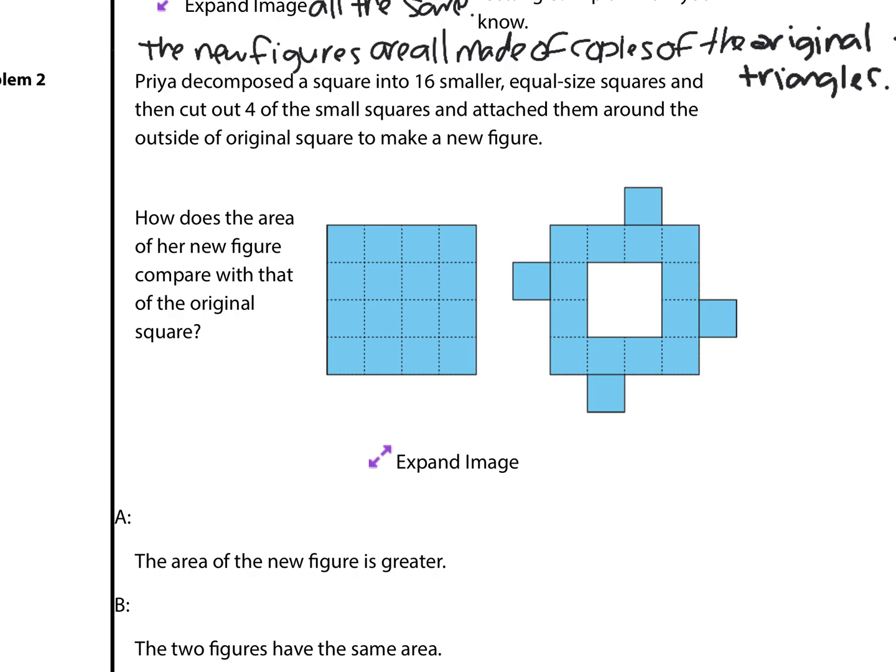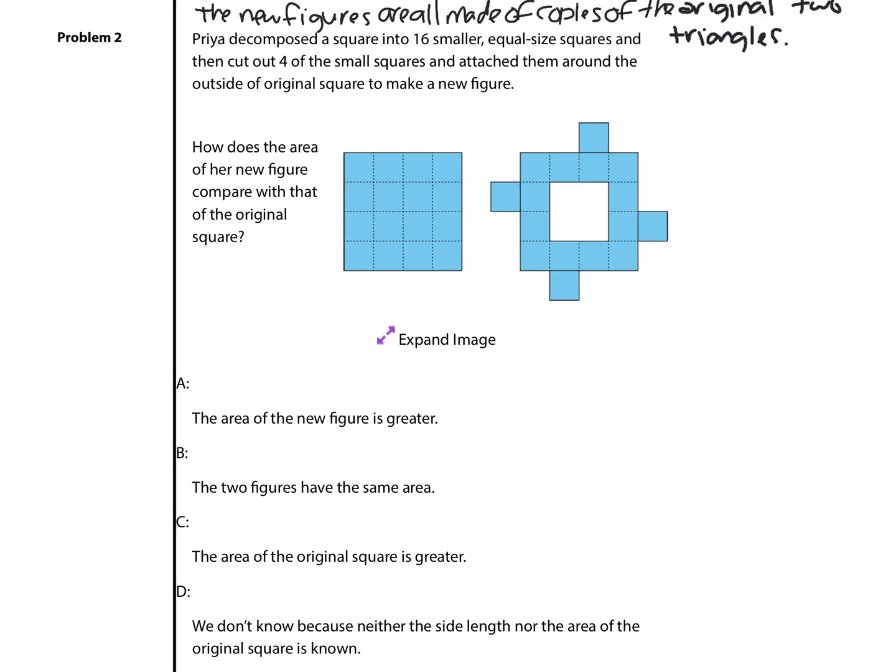Let's move on to question 2. How does the area of the new figure compare with that of the original figure? We have a multiple choice question here. Either A, the area of the new figure is greater. B, the two figures have the same area. C, the area of the original square is greater. Or D, we don't know because neither the side length nor the area of the original square is known. Well, that's not it. It's going to be B. The two figures have exactly the same area.